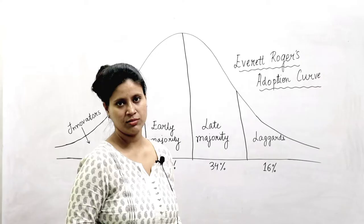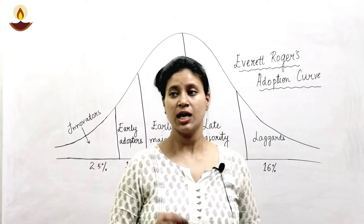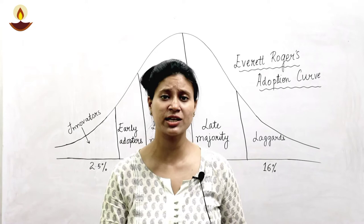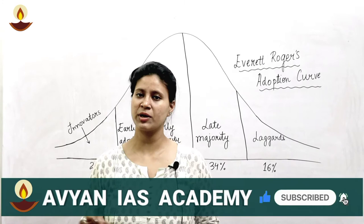What is happening basically? Whenever there is any innovation in our market or marketplace, or any new product has come in the market, then the percentage of consumers and what adoption rate is adopted by them — they are going to study a bell curve shape.